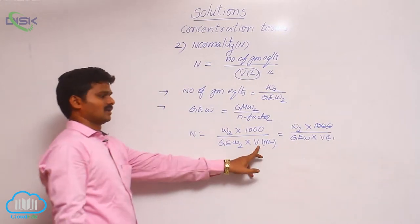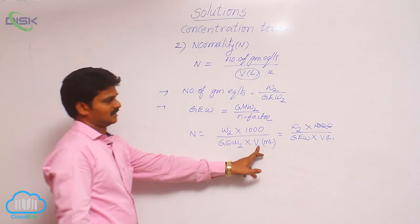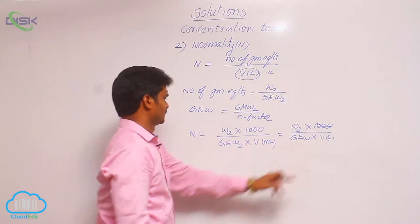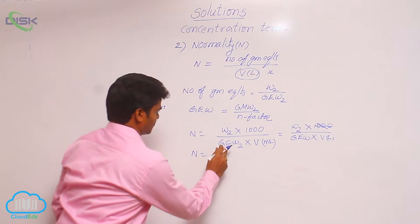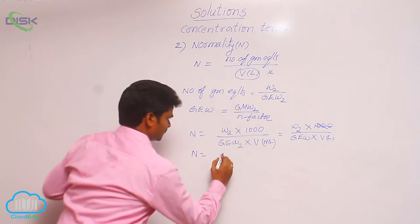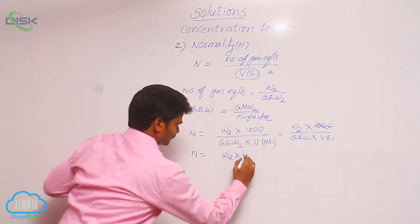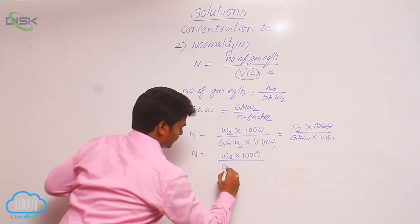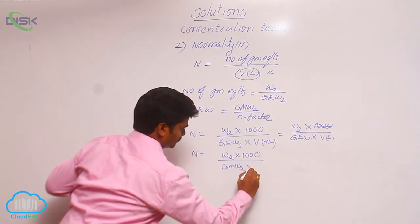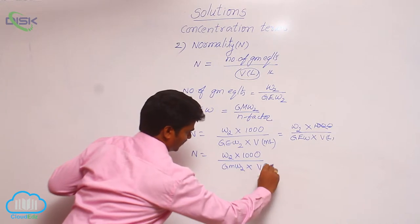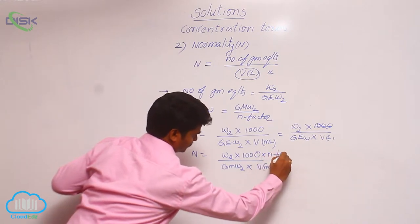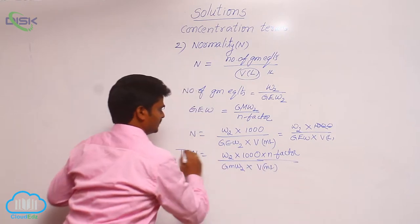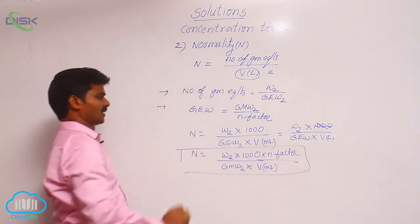When volume is given in milliliters we include the 1000 factor, but when volume is given in liters we do not write 1000. Substituting the gram equivalent weight formula gives: normality = W2 × 1000 divided by gram molecular weight of solute × volume in milliliters × N-factor. This is the standard formula for normality.